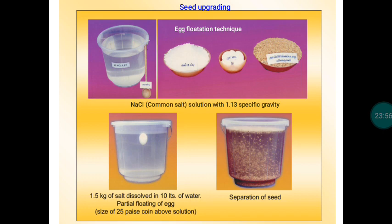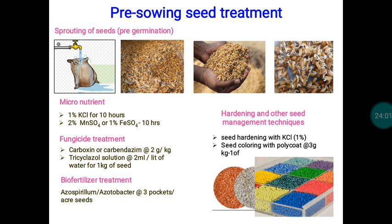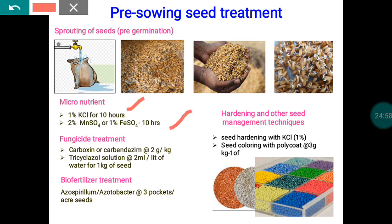After upgrading, additional treatments are given to help the seed perform well under field conditions. For drought tolerance, seeds are soaked in 1% potassium chloride (KCl) solution for about 10 hours, then dried under shade and brought back to original moisture content. This imparts a drought-tolerant mechanism, helping seeds germinate early under rainfed conditions.